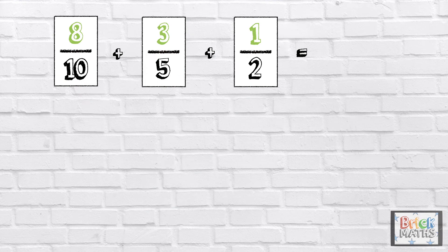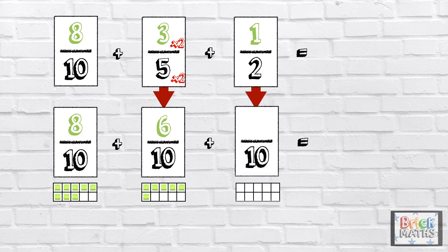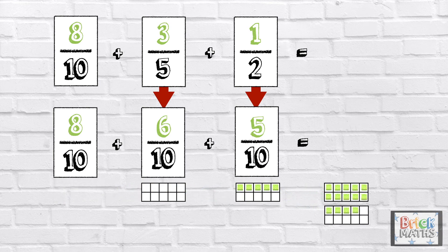So first we need to find an equivalent fraction for 3 fifths with its denominator as 10. We multiply 5 by 2 to get 10, so we need to multiply the numerator by 2 as well, which is 6. So the equivalent fraction is 6 tenths. Now we need to find an equivalent fraction for 1 half with its denominator as 10. We multiply 2 by 5 to get 10, so we need to multiply the numerator by 5, which is 5. So the equivalent fraction is 5 tenths. Now that all the denominators are the same, we can add the fractions: 8 tenths add 6 tenths add 5 tenths equals 19 tenths.